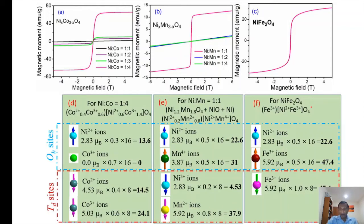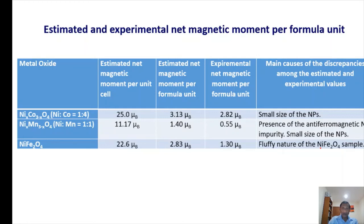For nickel ferrite, the difference is about 22.6 Bohr magnetons. In this table, we list the estimated net magnetic moment per unit cell for nickel cobaltite with Ni:Co 1:4, which gave superparamagnetic behavior. Since every unit cell has about 8 formula units, dividing gives approximately 3.13 Bohr magnetons per formula unit. Experimentally, we obtained 2.82 Bohr magnetons — slightly lower than expected, which depends on the small size of the nanoparticles, as smaller size means higher specific surface area and highly disordered surface spins.